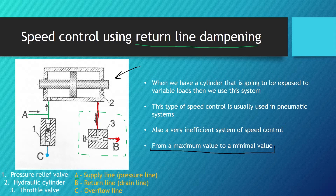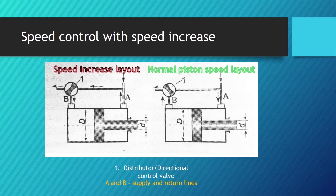We have now seen all variants of speed control for reducing speed. But what if we want to increase the speed of the hydraulic cylinder — to bring the speed from a minimum value to a maximum value? If we want to increase the speed but the amount of work fluid supplied to the cylinder is constant, we use a scheme connecting the supply and return lines of the cylinder, assisted by a distributor or directional control valve marked with number one in this picture.